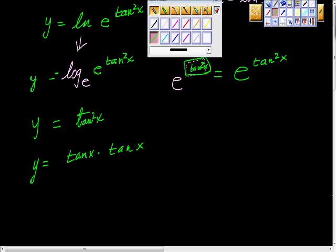Because, of course, if we have tan squared x, we have tan x times tan x. Okay, so having said that, I'm going to set this up as product rule.